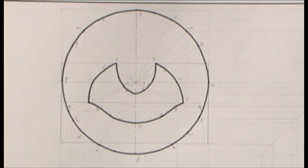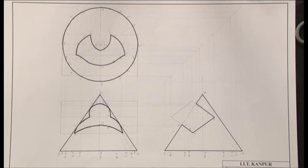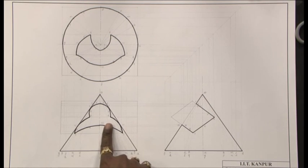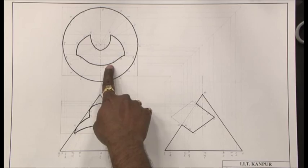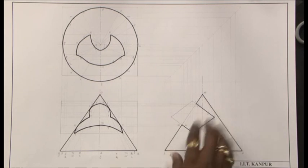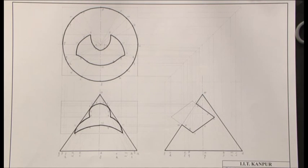This is how the entire thing is going to look like: prism cut away from the cone, intersection profile in the front view, intersection profile in the top view, and the entire thing in the profile view.